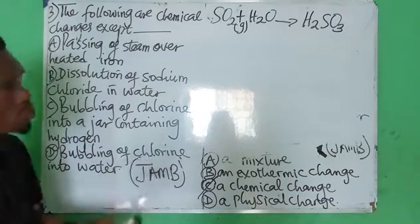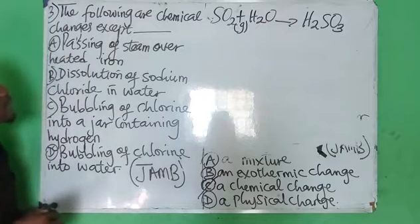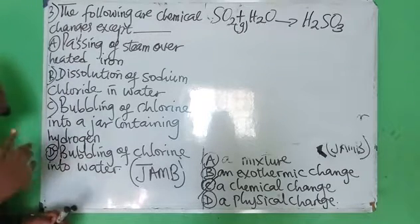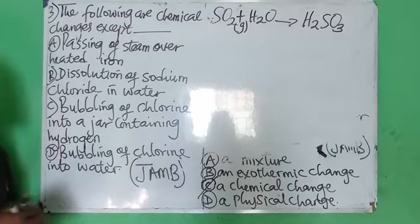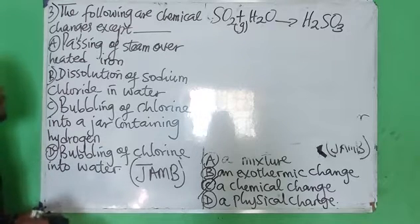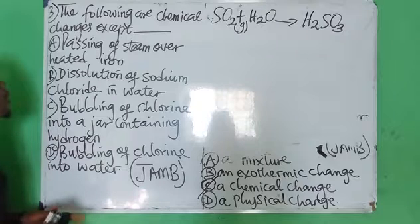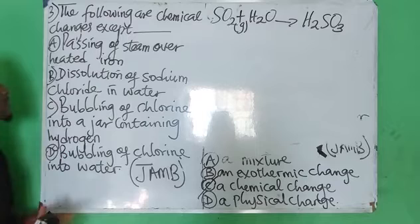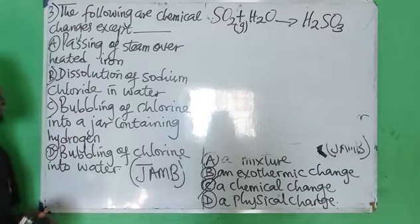Number three says the following are chemical changes except: A. passing of steam over heated iron, D. dissolution of sodium chloride in water, B. bubbling of chlorine into a jar containing hydrogen.